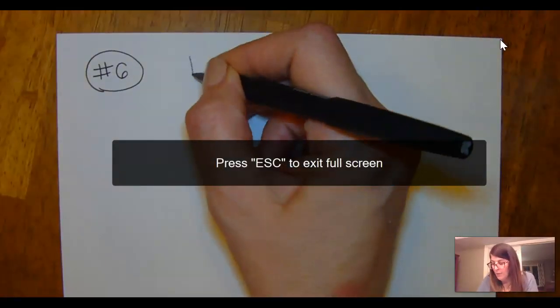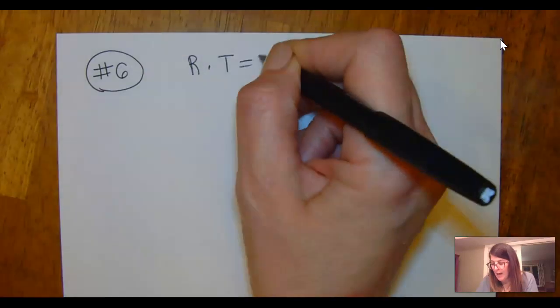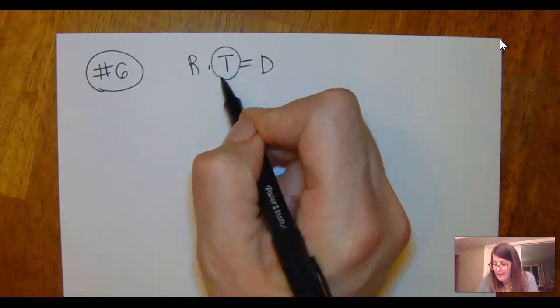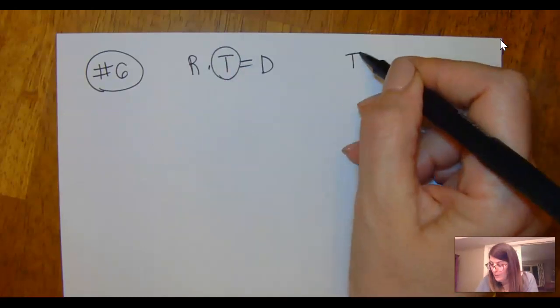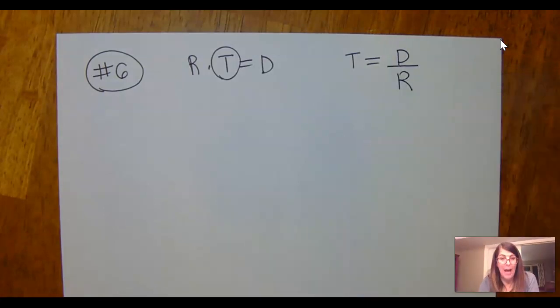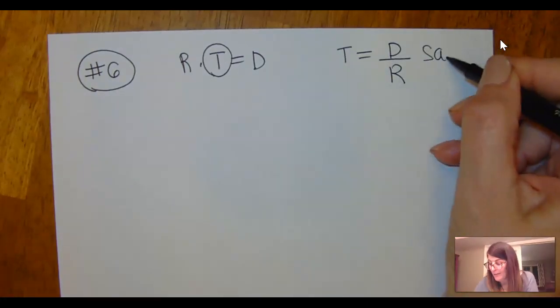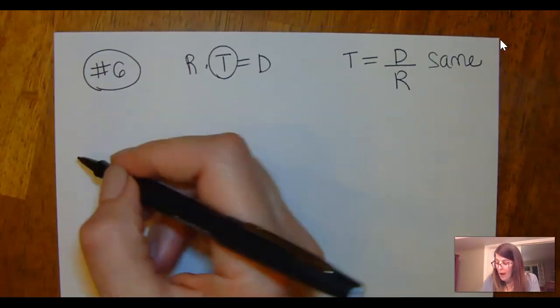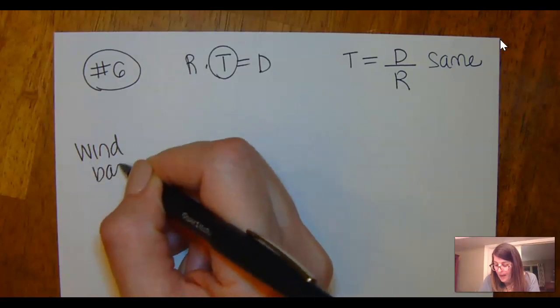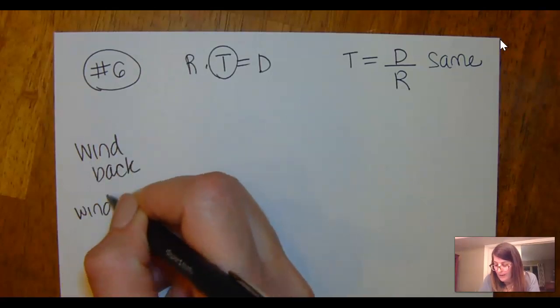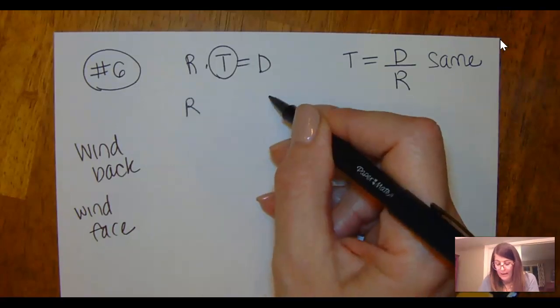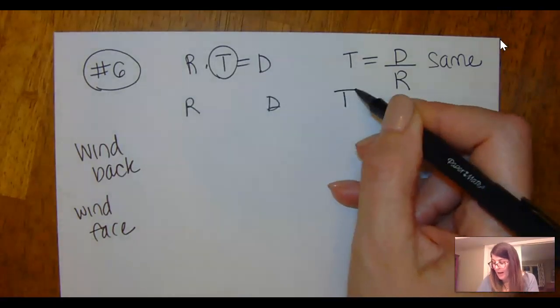I know that rate times time equals distance. In this problem they're talking about the times being the same, so I'm going to use time equals distance divided by rate, and my times are going to be the same. I'm going to talk about the wind being at his back and the wind being at his face. So let's talk about his rate, distance, and time.